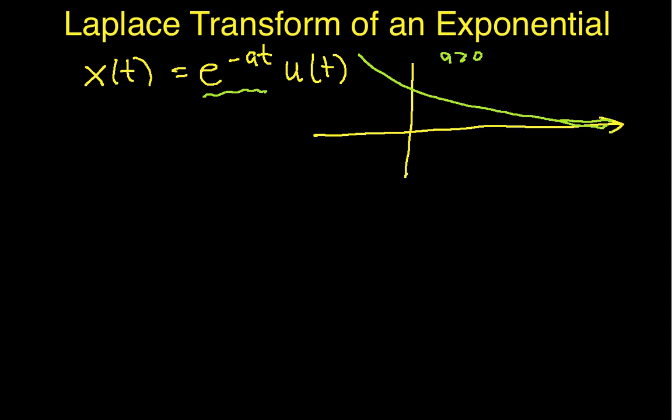u of t, as I'm sure you all remember, is the unit step function that looks like this. So if I take the product of these two, I get a function that's 0 for values of t less than 0, jumps up to 1, and then decays exponentially.